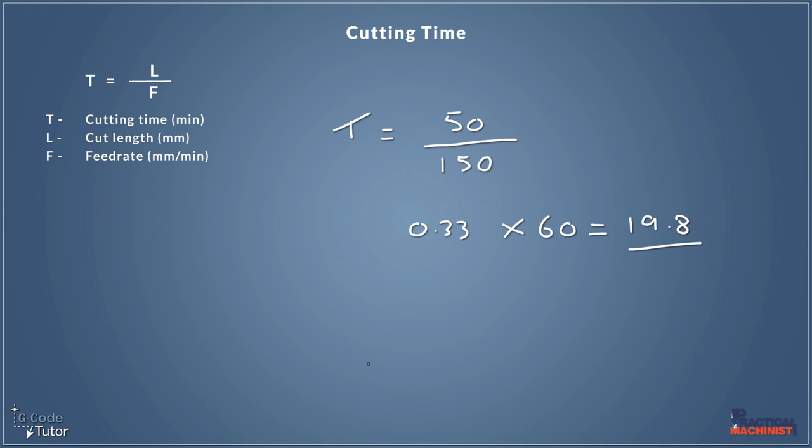Let's take a look at one last imperial example. So our final imperial example, we're looking for the time represented by T. And we're going to give it a cutting length this time of six inches. So we're cutting a six inch long length. And we're using a feed rate of three inches per minute. So it's a nice easy equation. We can almost see what the answer is here without a calculator.